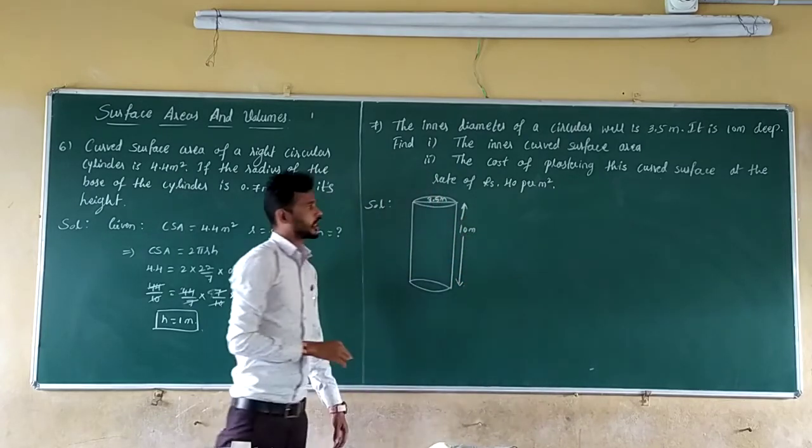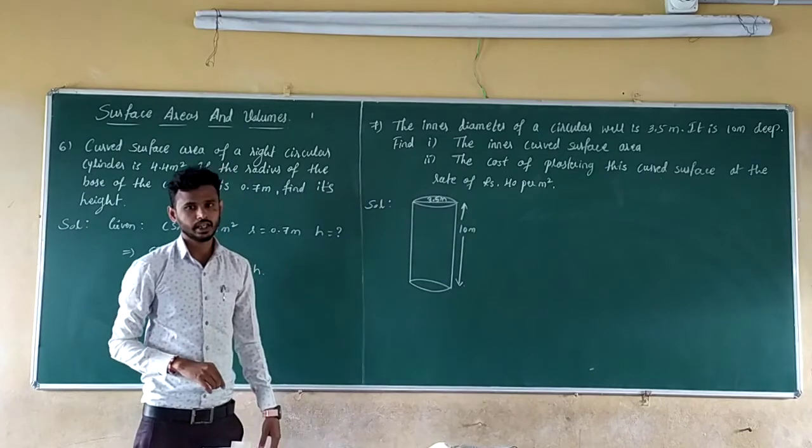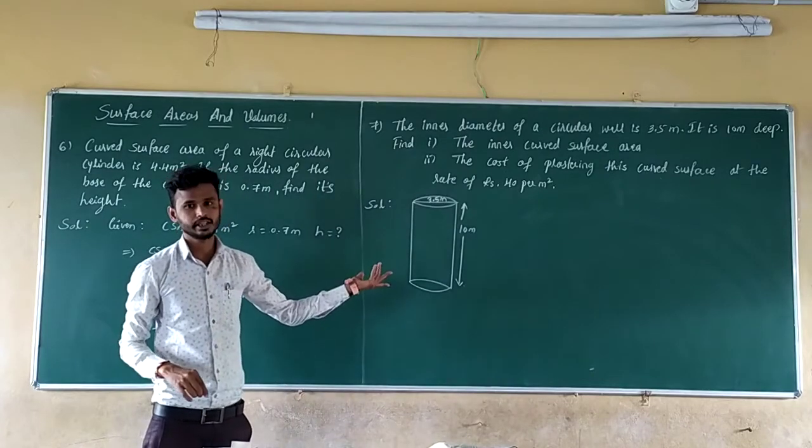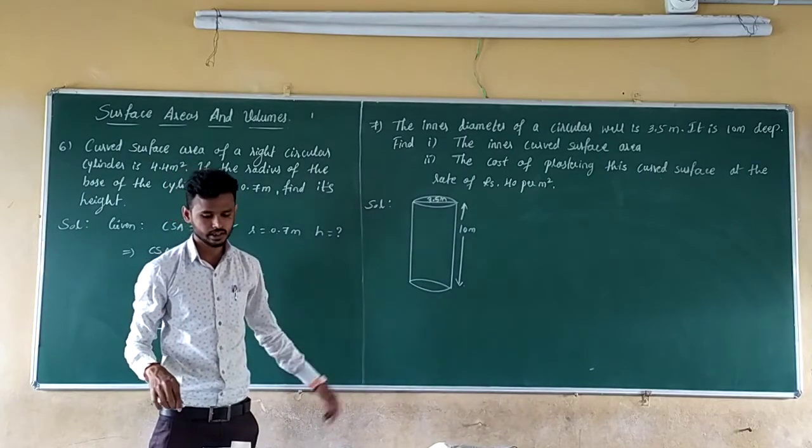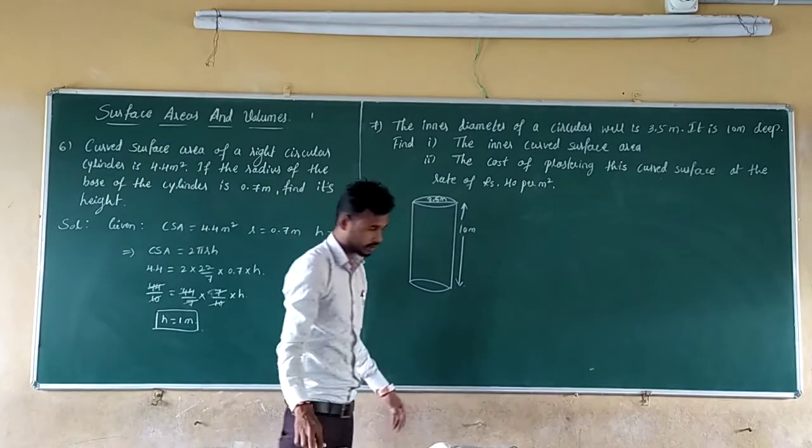Find the inner curved surface area. Use the CSA formula. Diameter is 3.5 m and height is 10 m.